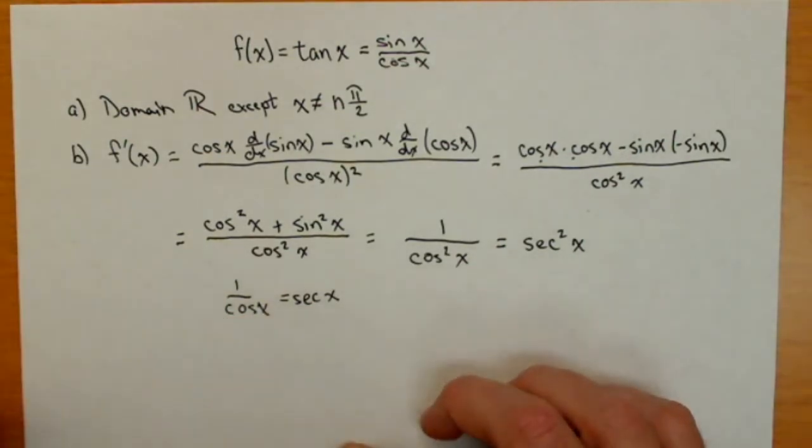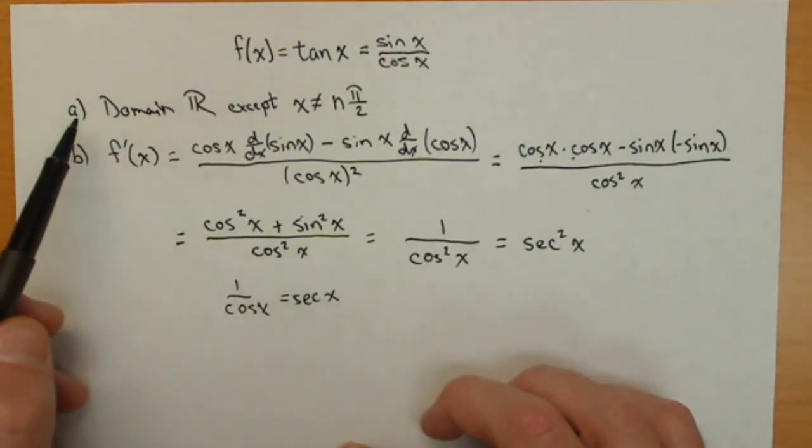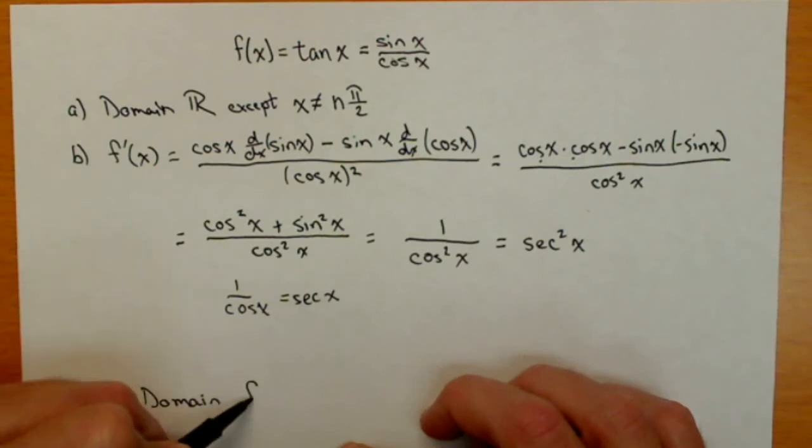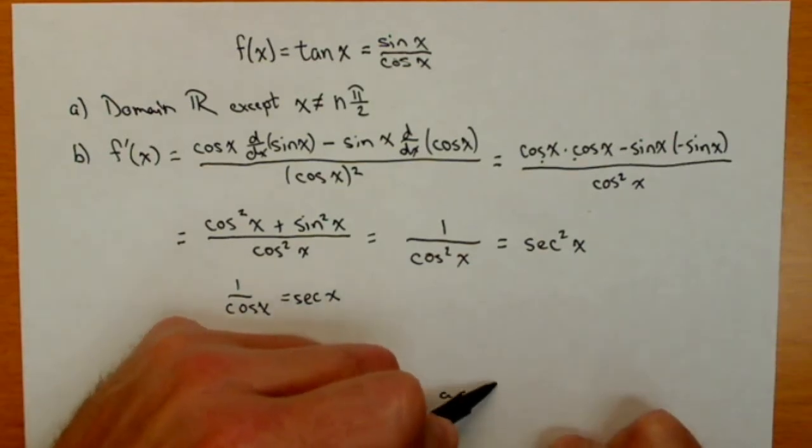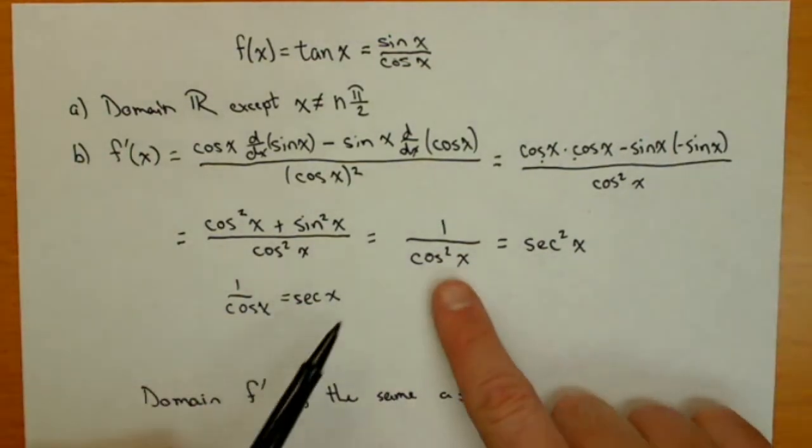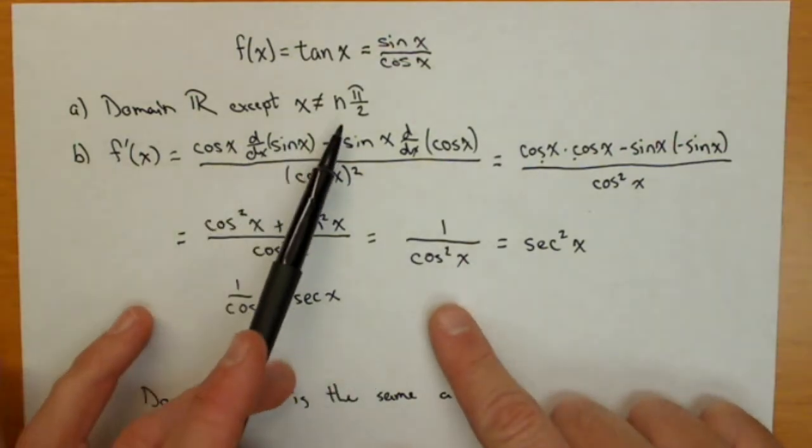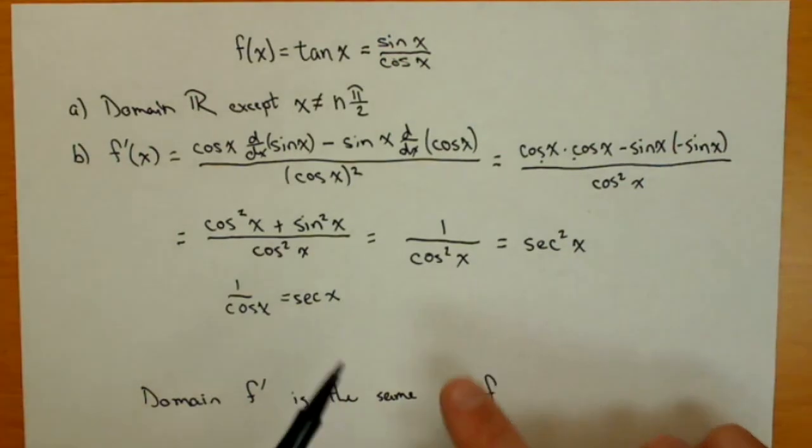Last thing we want to look at is, for what values is f prime of x defined? f prime of x is going to have the same domain. So, domain of f prime is the same as f. Because cosine is once again in the denominator, we need to exclude all the integer multiples of π/2. So the derivative has the same domain as the original function in this case.